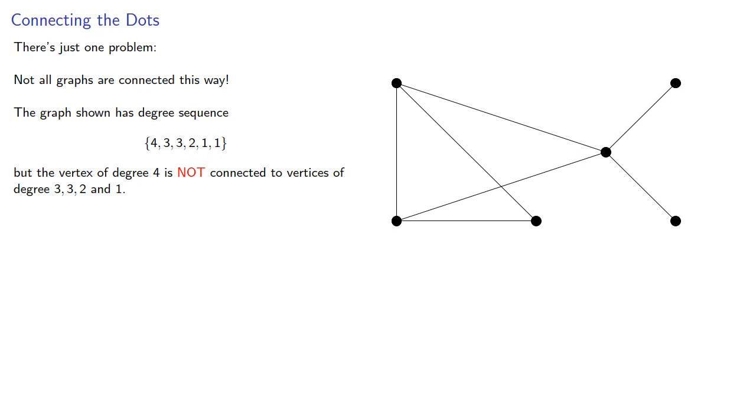And in fact, if we removed this vertex of degree 4, we'd get a graph with degree sequence.